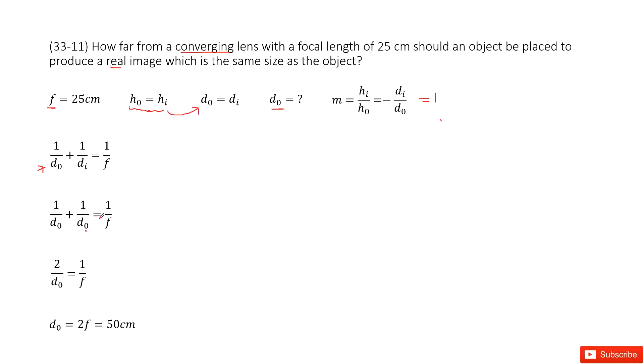And then we just simplify this equation. It is a function for d_0. If d_0 equals 2 times f, the focal length is 25 centimeters, we can find the object distance as 50 centimeters. Thank you.